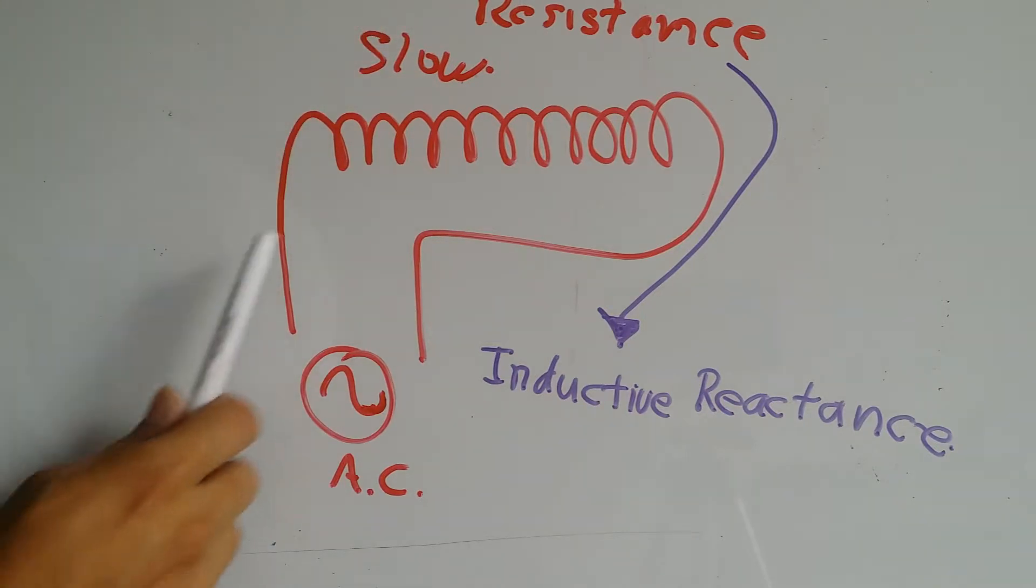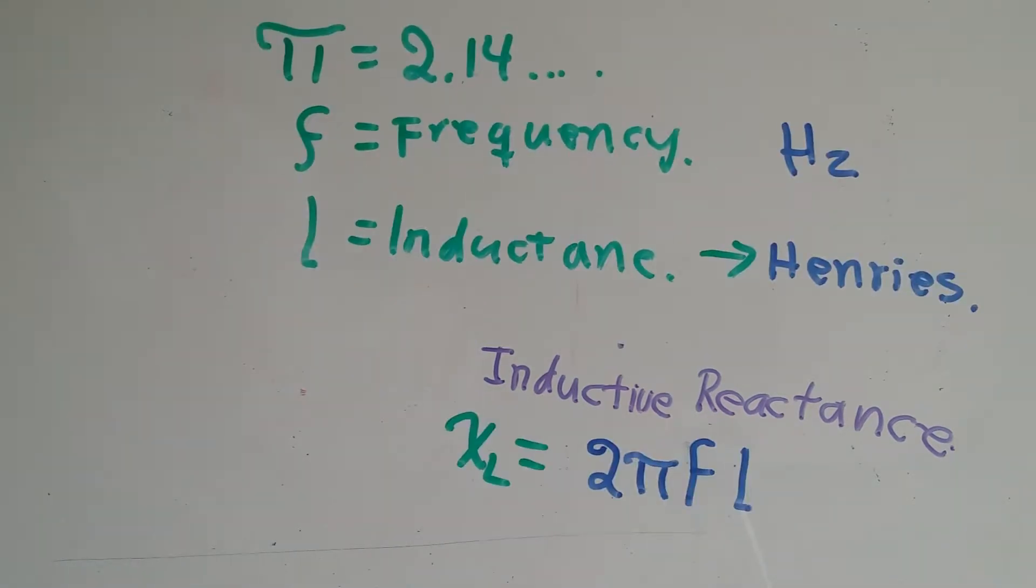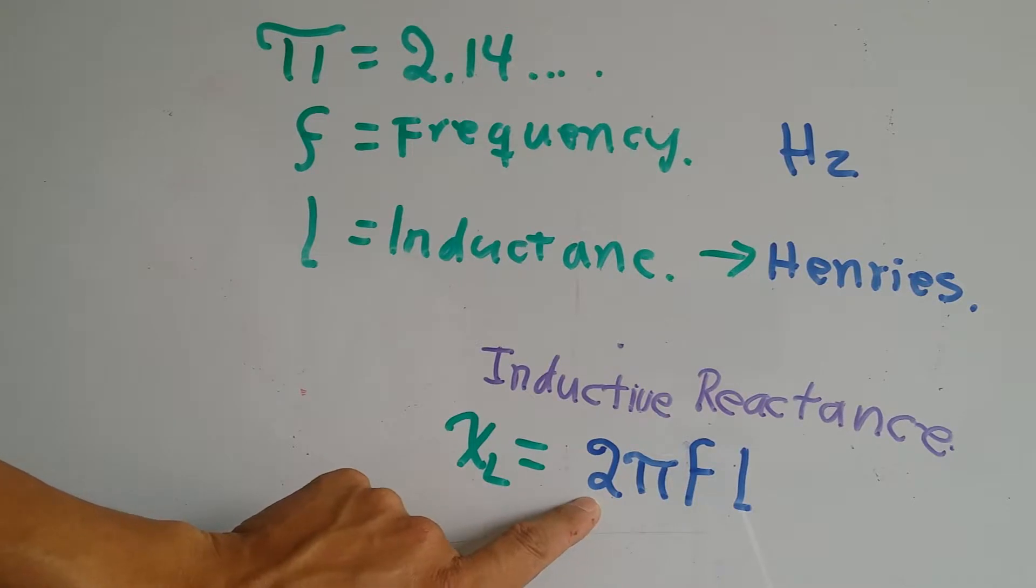The resistance that the inductor produces is actually called inductive reactance. Inductive reactance is represented by an X with a little L.